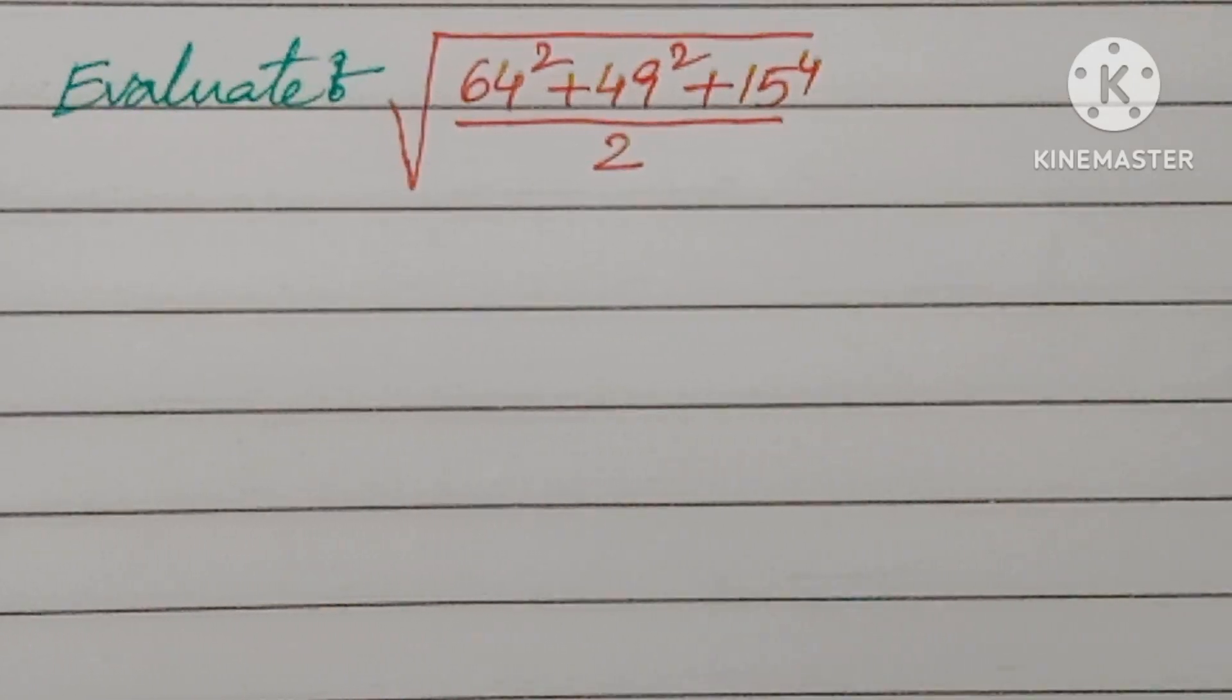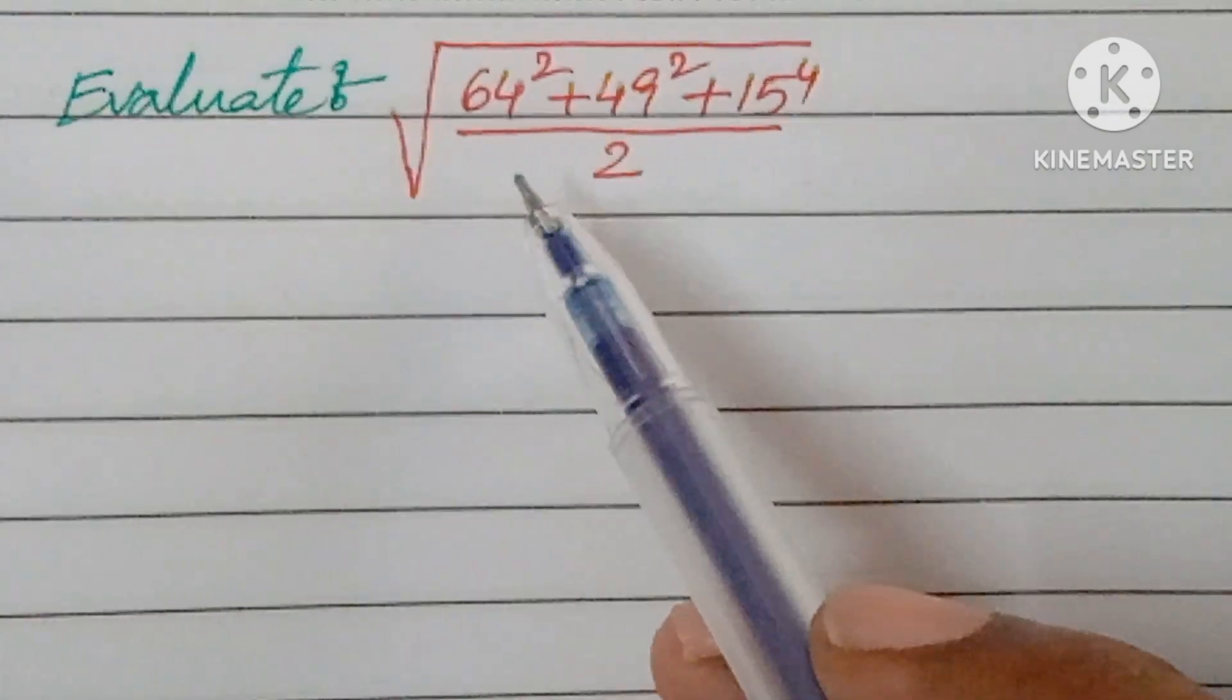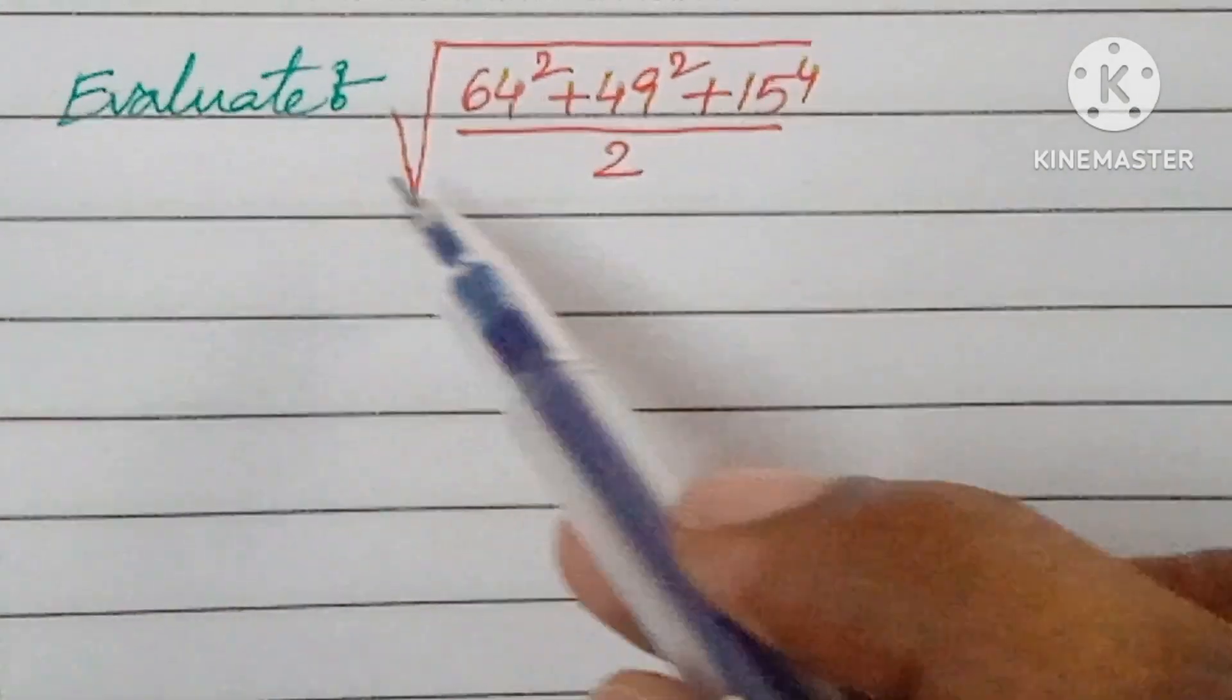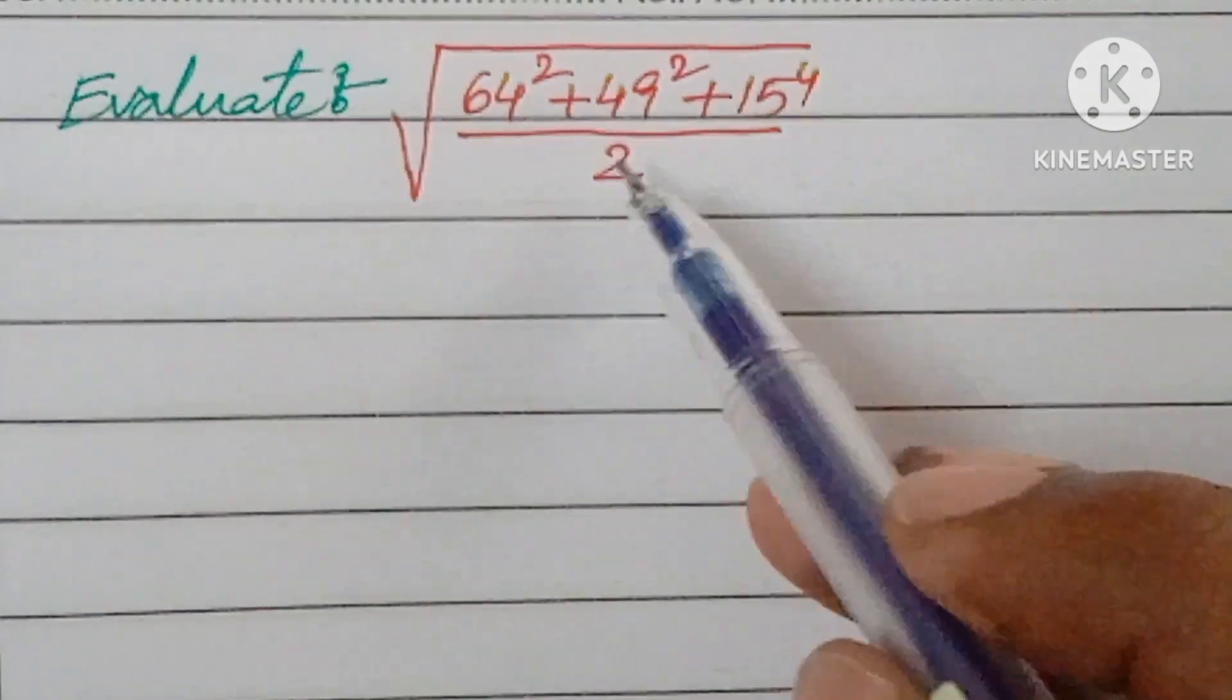Hello, welcome back to NCG Max. Today we are looking at one logical critical problem. The question is: evaluate the square root of 64² plus 49² plus 15⁴ over 2.